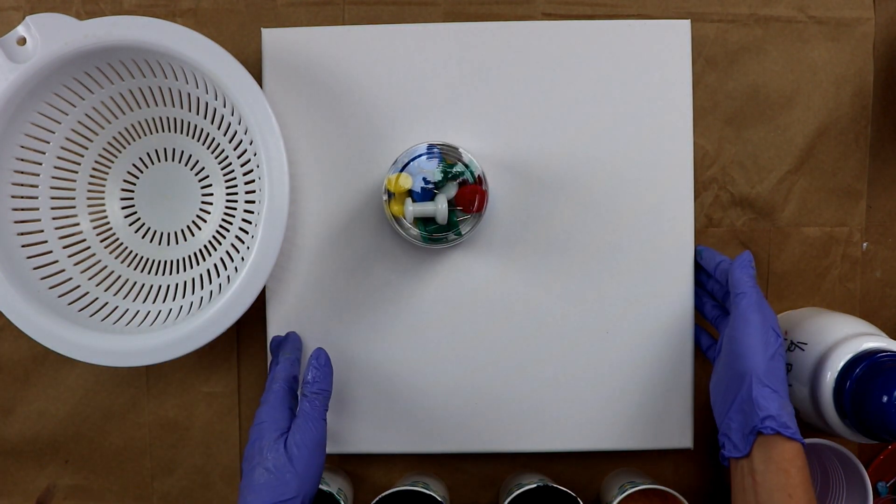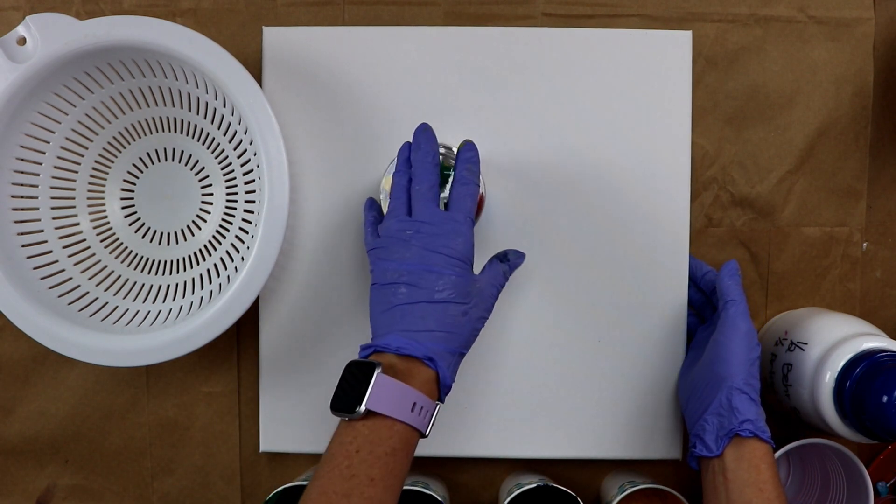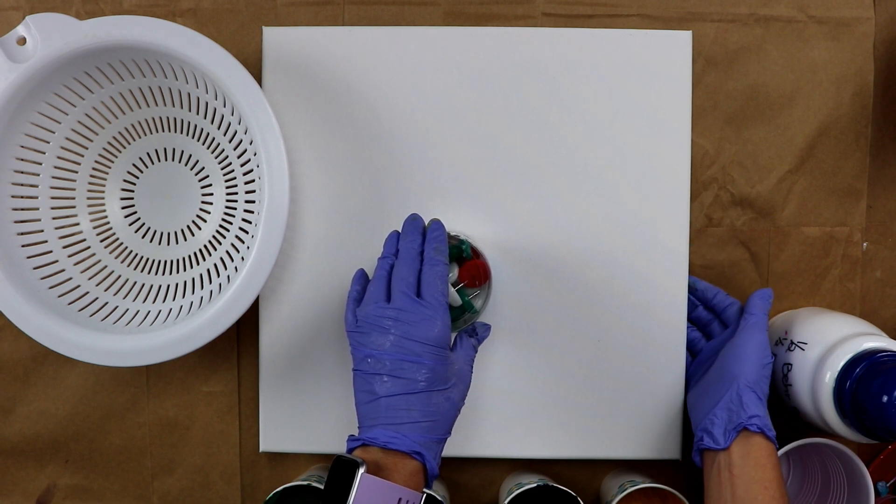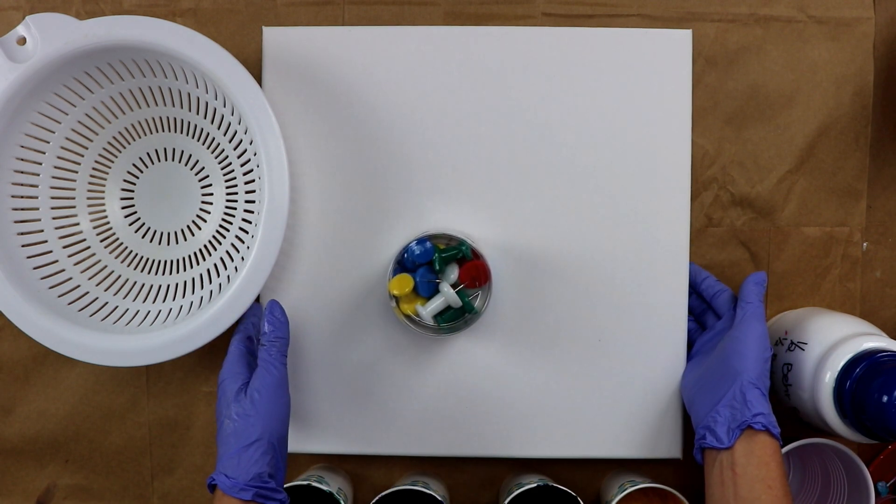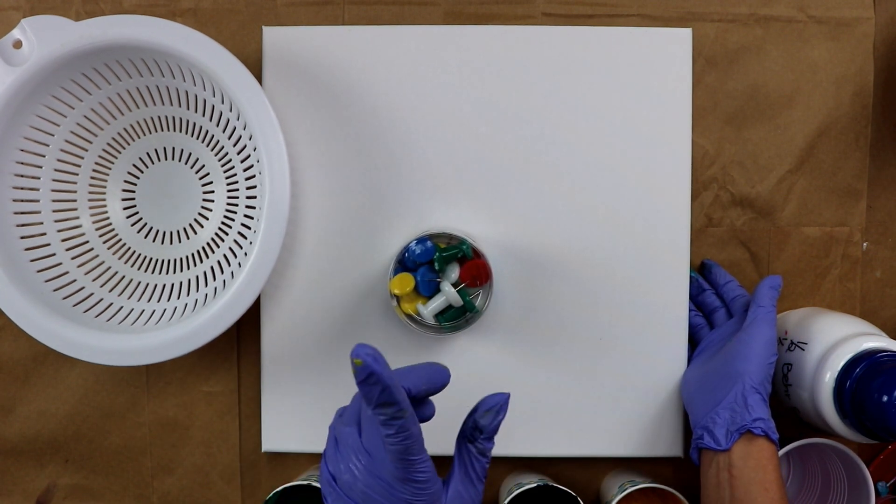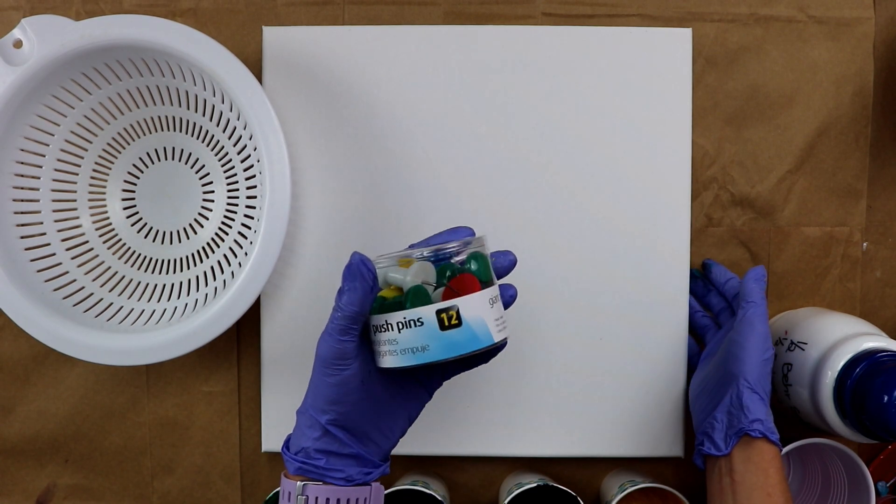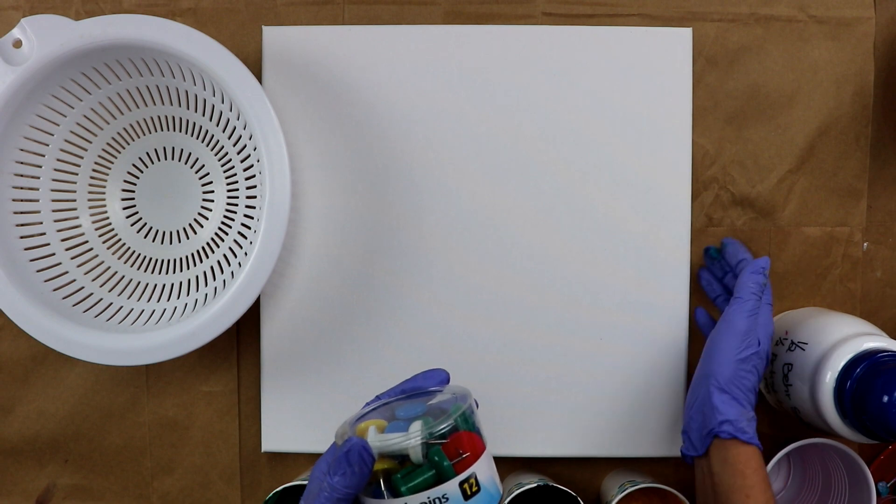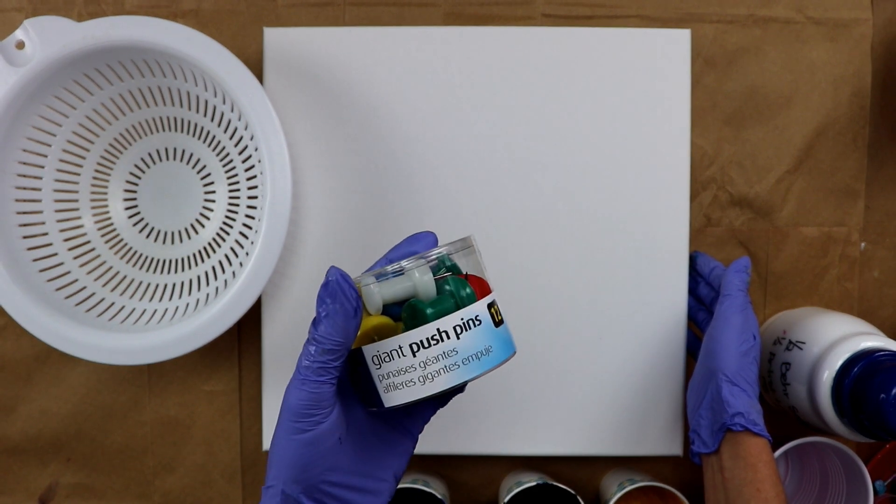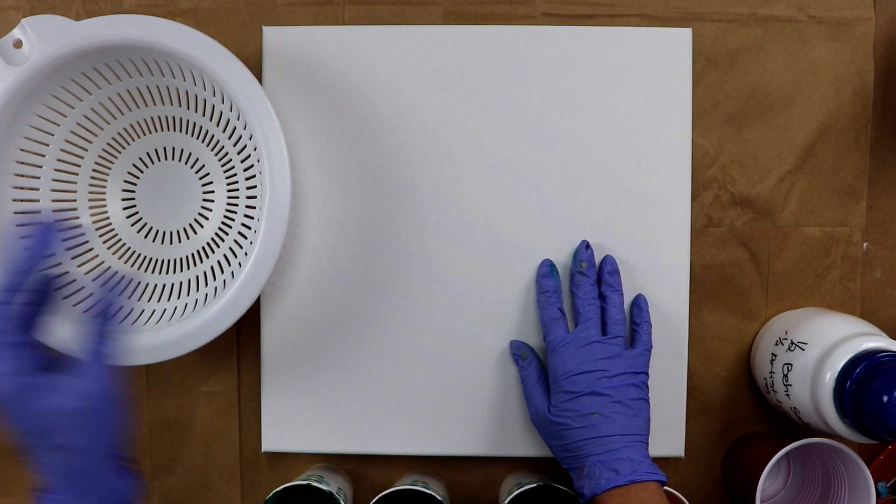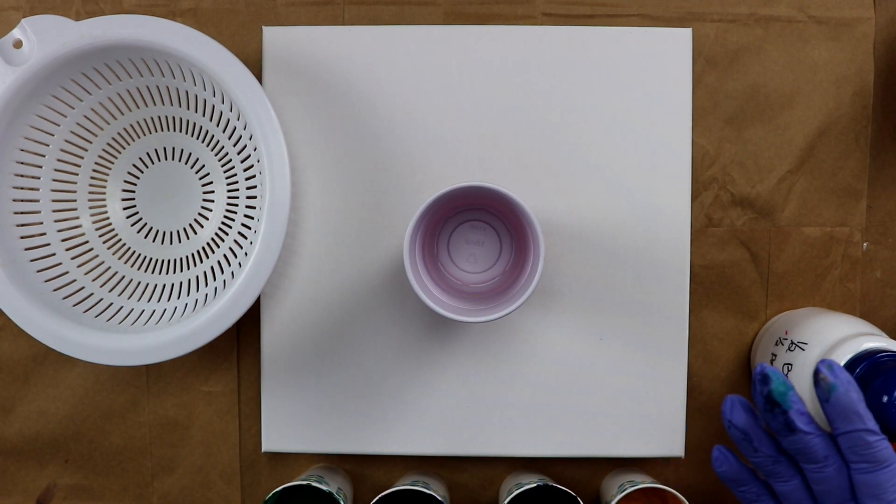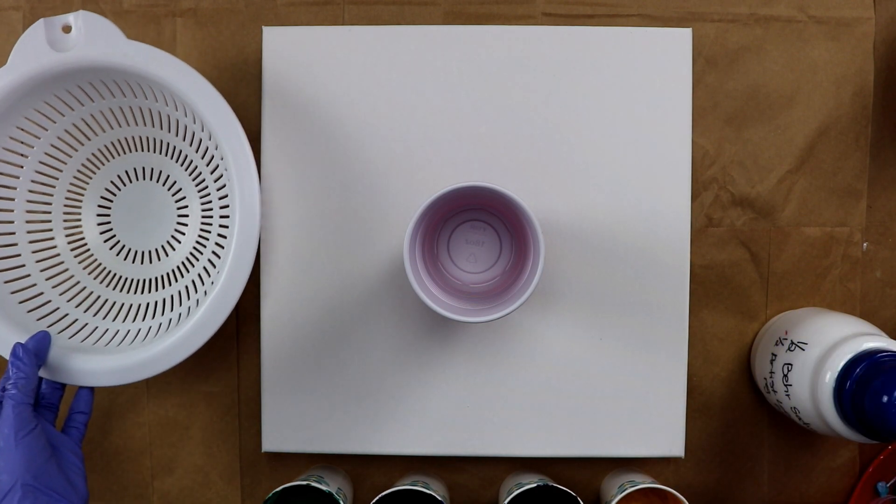So I thought I would give them a try because sometimes when I use the small ones, my paper has a tendency of curling up after it's gotten wet, and it sometimes will stick to my canvas. So I thought these would be perfect to lift it up much more than the small ones. If you're interested, I do have a link to those in my description, and it'll take you right to my Amazon store, and you can check them out.